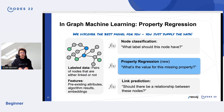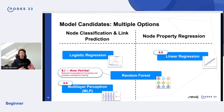In terms of in-graph machine learning, we added property regression so you can predict the value for a missing property, and we also discover the best model for you — just supply the data and we'll take care of it. We added logistic regression for node classification and link prediction, and in 2.1 we made random forest even faster. For node property regression we added linear regression, and for node classification and link prediction we added multi-layer perceptrons, so you can now create more model candidates.